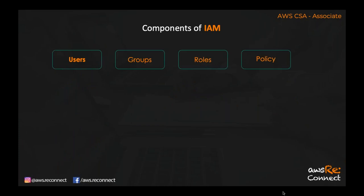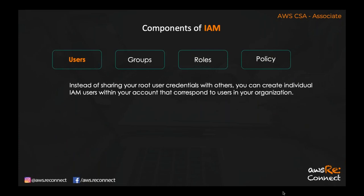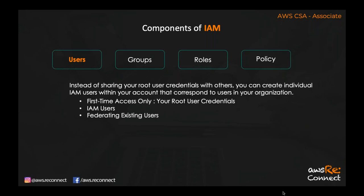There are four components of IAM: user, group, roles, and policy. A user is a credential or a physical person who has authority to access your AWS account. Instead of sharing your root user credentials with others, you can create individual IAM users that correspond to people in your organization. When you first create an AWS account, you get one root user credential. After that, you can create IAM users or fetch existing users from an active directory.